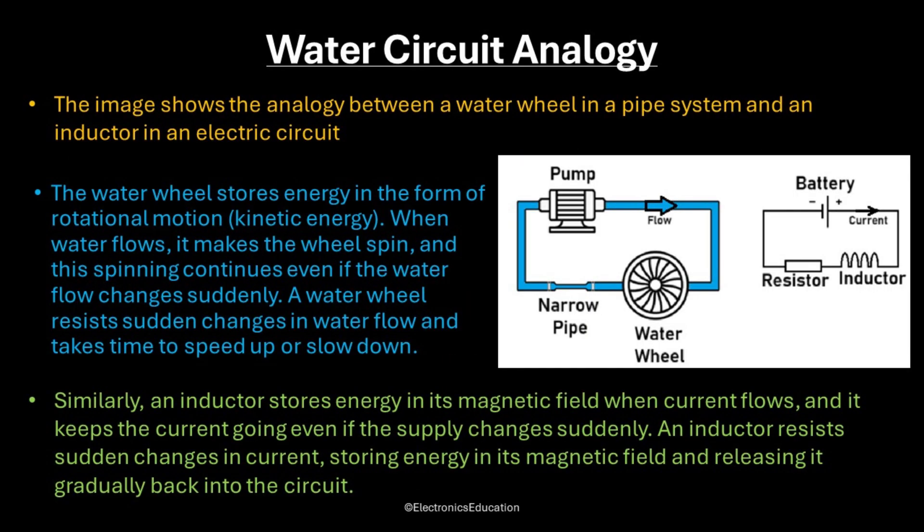We can compare the electric circuit with the water pipe circuit as shown in the diagram. Here, the water flow is similar to the electric current, and a water wheel can be compared with an inductor. The water wheel stores energy in the form of rotational motion or kinetic energy. When water flows, it makes the wheel spin, and this spinning continues even if the water flow changes suddenly. A water wheel resists sudden changes in water flow and takes time to speed up or slow down.